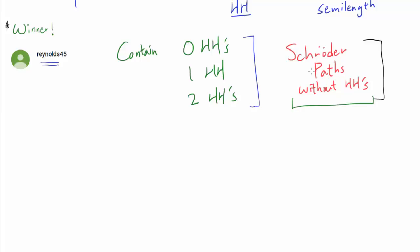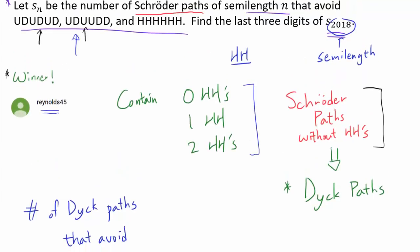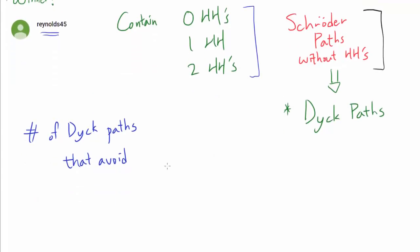So we are not going to worry about HHs until near the end of the solution. And there is actually a special name for Schröder paths without HHs. They are called Dyck paths. You don't have to know this, but it's easier for me to say Dyck paths instead of Schröder paths without HHs every single time.